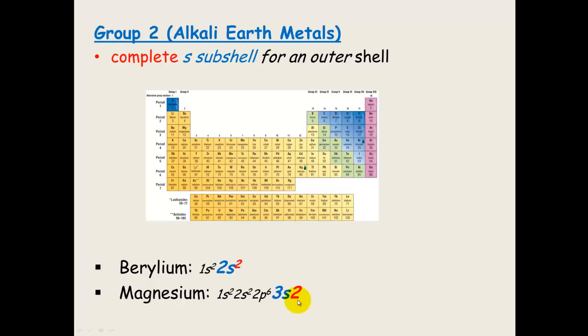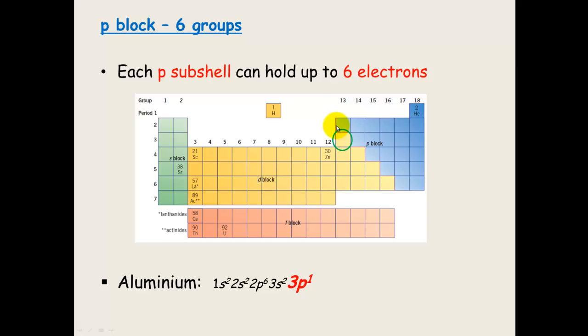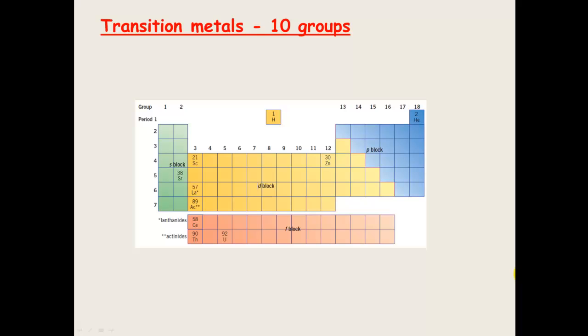The P block here has 6 groups. 1, 2, 3, 4, 5, 6. Each P subshell can hold up to 6 electrons. So, let's have a look at aluminium. Aluminium must be filling up its P subshell and it has 1 electron in it because it is in P1. Argon. Argon is in P6. It is in the third period. So, it is filling up the 3P6 subshells.